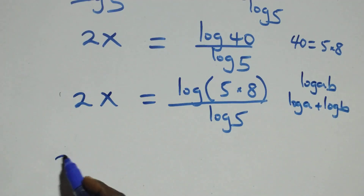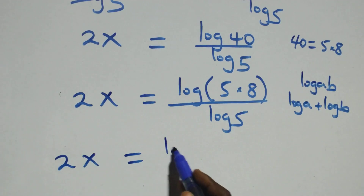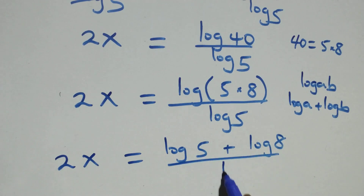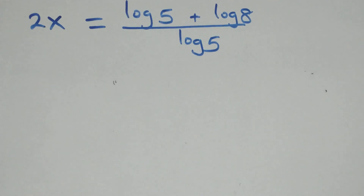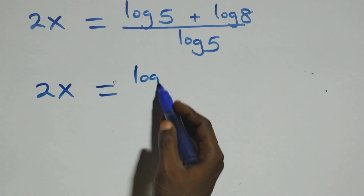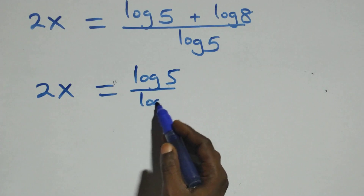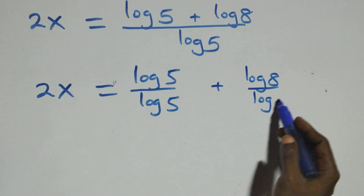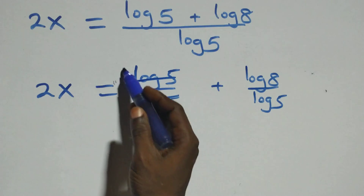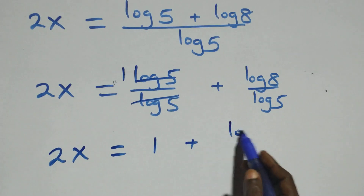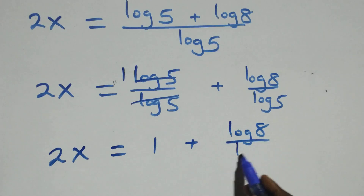That is, here we have 2x equals (log 5 plus log 8) over log 5. We separate this into two fractions: 2x equals log 5 over log 5 plus log 8 over log 5. Here, log 5 cancels with each other and one is left, which implies 2x equals 1 plus log 8 over log 5.